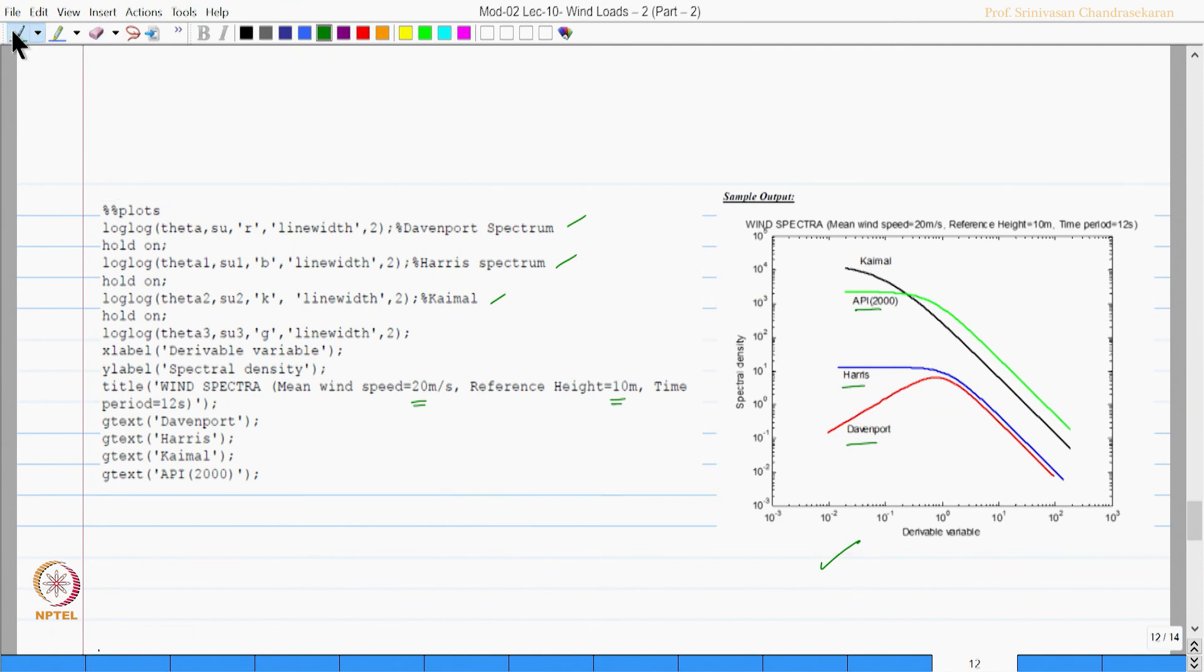The variation on the spectra are higher beyond a specific value of the variable which is theta. Beyond that for a value more than the log scale of 10 power 0 or 1, beyond that the variation is minimal. Whereas, for a variable theta lesser than 1, you will see that the spectrum values or spectral ordinates very distinctly vary for different values of the variable.